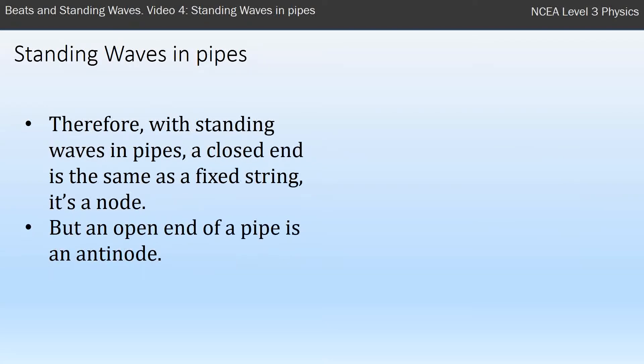What that means is a closed end of the pipe is the same as a fixed string—we always get a node. But the open end of the pipe is the opposite, it's an anti-node, and that gives us different patterns of standing waves in our pipes than we had on our string.